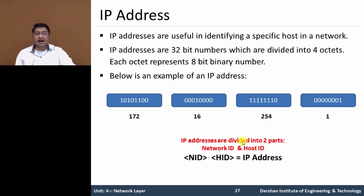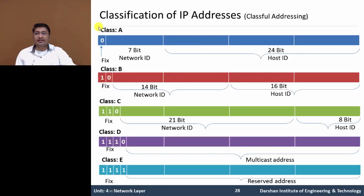IP Addresses are divided into 2 parts: the first is Network ID and the second is Host ID. Based on that, we categorize the class. This classification of IP Addresses is called Classful Addressing. In that, we have 5 classes — Class A to Class E.